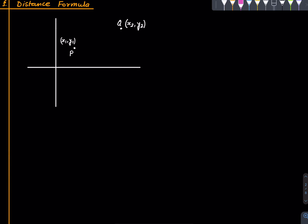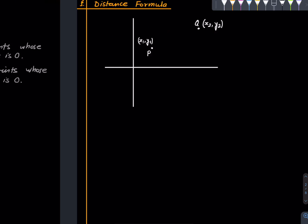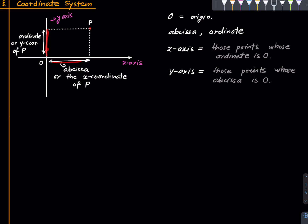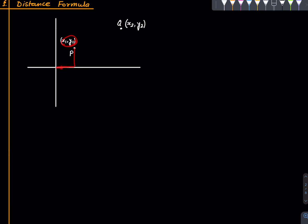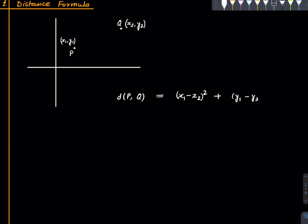So we have the distance formula. Suppose we have two points P and Q with coordinates x1, y1 and x2, y2. When we have a point P whose abscissa is a and ordinate is b, we may also write the ordered pair (a, b) — this denotes the point P whose abscissa is a and ordinate is b. So we want to write down a formula for the distance between P and Q: take the difference between the abscissas and square it, difference between the ordinates and square it, and take the square root.